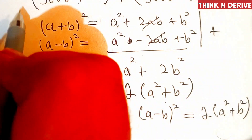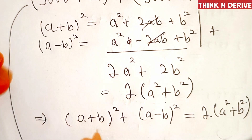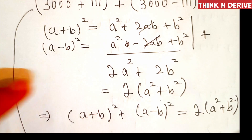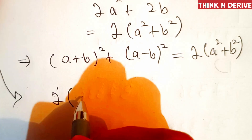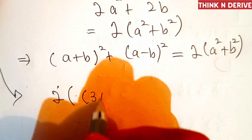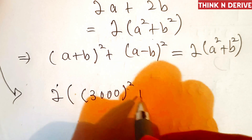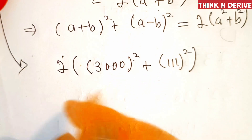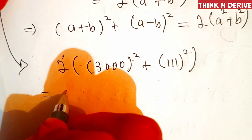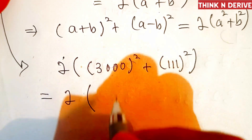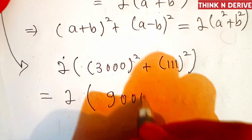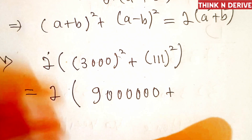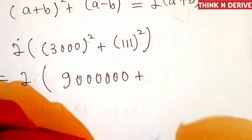Now when we apply this to our question, a equals 3000 and b equals 111. So we get 2(3000² + 111²), which equals 2(9,000,000 + 111²).